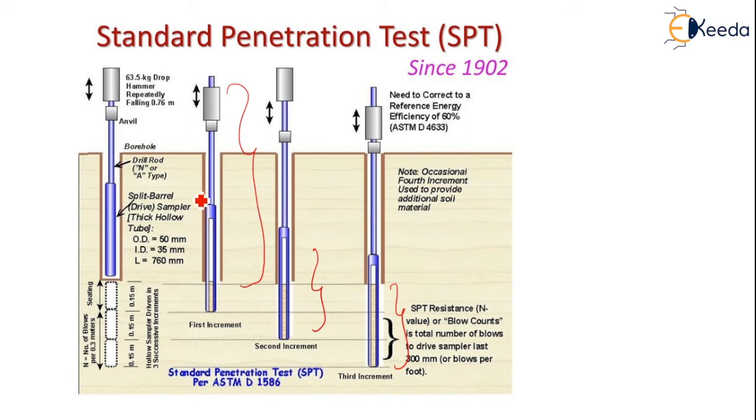Here you can see the rod and the drop hammer, which is dropped repeatedly from 0.76 meters, recording blows for every 0.15 meter interval.